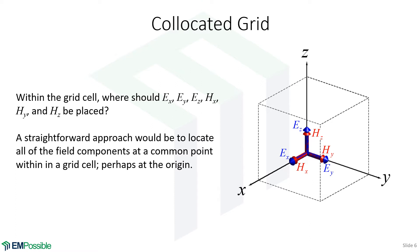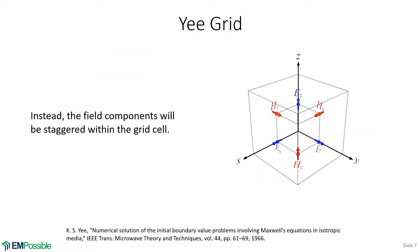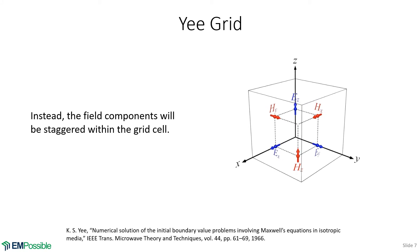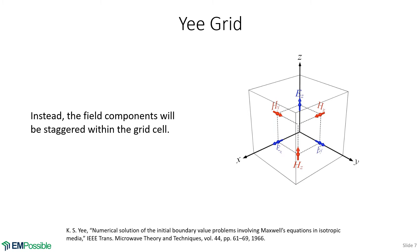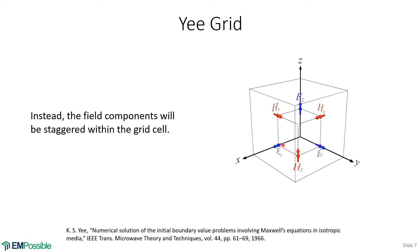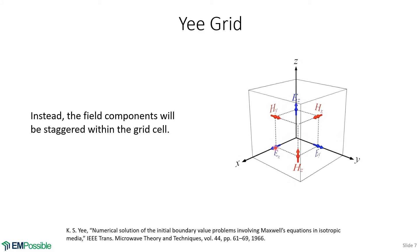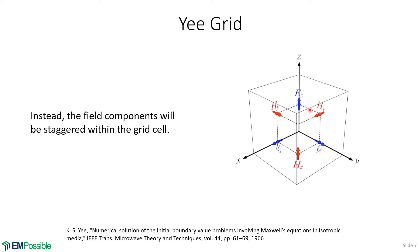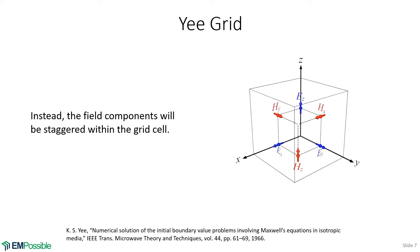Turns out, this doesn't work for many reasons. The better approach is to stagger these field components. This is one Yee cell and how we stagger them. Notice the x component of the electric field is offset along the x-axis, the y component offset along the y-axis, and the z component along the z-axis.